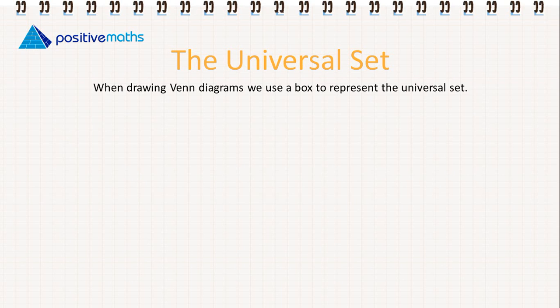When drawing Venn diagrams, we use a box to represent the universal set. So let's look at an example. We have A is the set {2, 4, 6, 7, 9}.